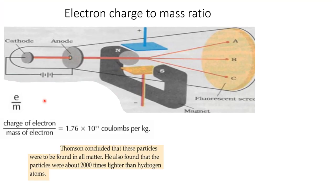From this study, Thomson was not able to find the individual charge or mass of the electron — only the charge-to-mass ratio. He also concluded that these particles were to be found in all matter, because regardless of the material used to make the cathode, the same result was obtained. He also found that these negatively charged particles — electrons — were about 2,000 times lighter than hydrogen atoms. At the time, hydrogen atoms were thought to be the smallest particles in existence, but Thomson was able to show there was an even smaller particle: the electron.